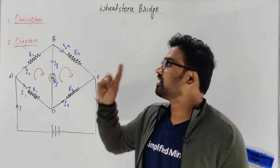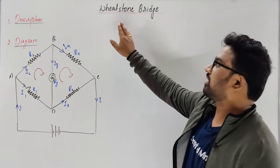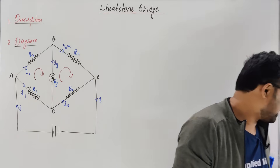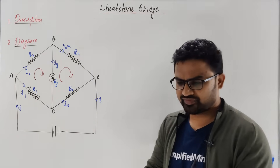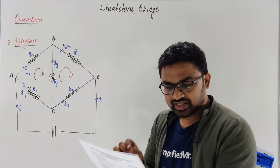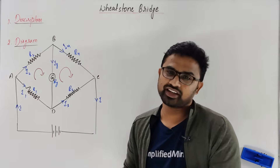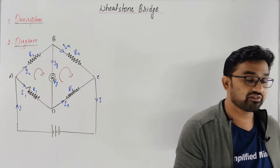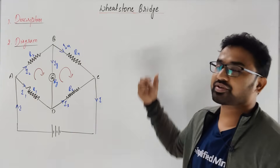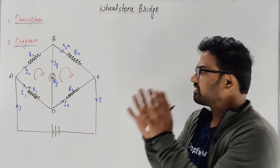So at the end, you have to understand this very well. They ask you to derive the conditions for Wheatstone Bridge using KCL and KVL — they've asked many times. The question will be like: using Kirchhoff's rules, obtain the conditions for balanced Wheatstone Bridge. You have to apply KCL and KVL and derive the expression for the balanced condition.